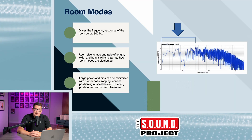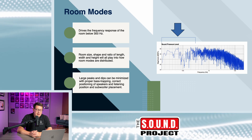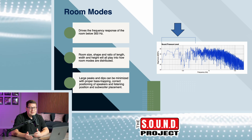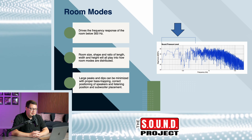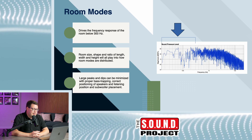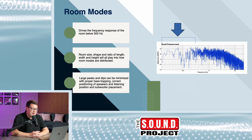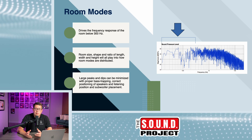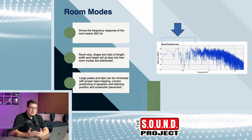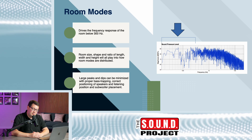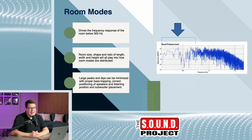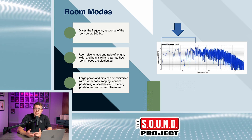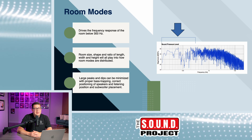Room modes impact the low-frequency range — typically 300 hertz and below. Many things factor into how those room modes will impact things: room size and shape, and the ratio of the length, width, and height of the room, especially in a rectangular room. You want to select dimensions that aren't divisible by the same number or each other if possible. Understand that a lot of times we're just given the room we have available — a second or third bedroom — and you want to select the one with the best dimensions possible.